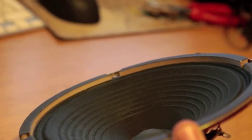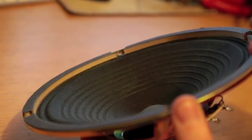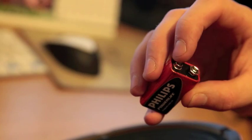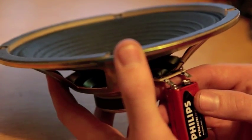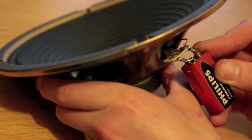On a 9-volt battery, the big terminal is negative and the small one is positive. We're going to try touching this first.